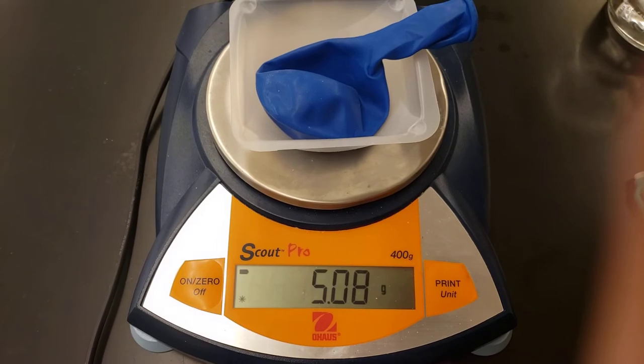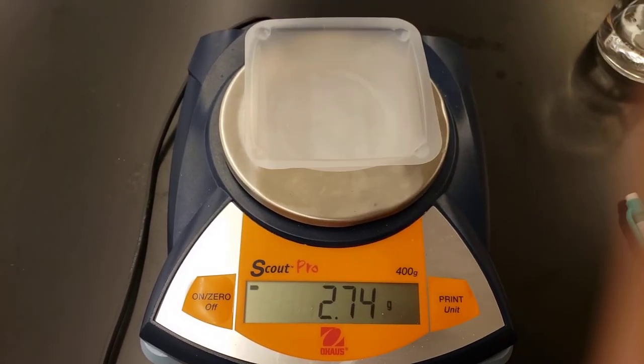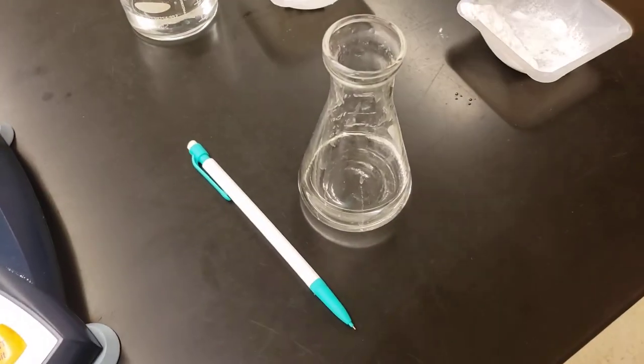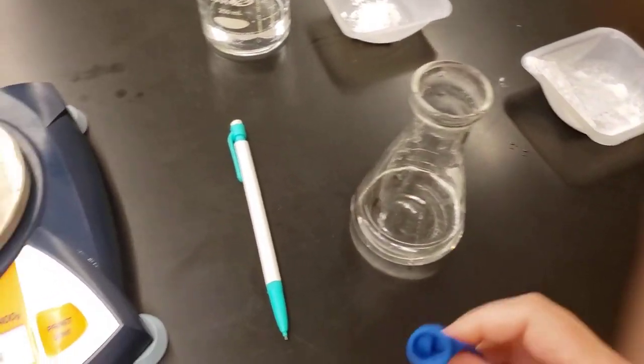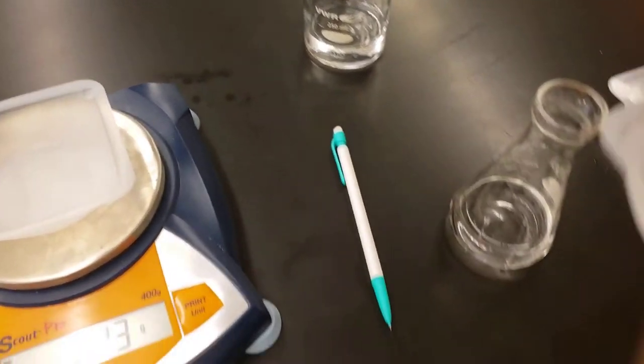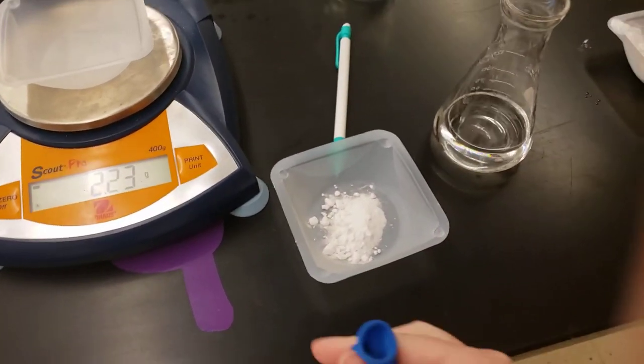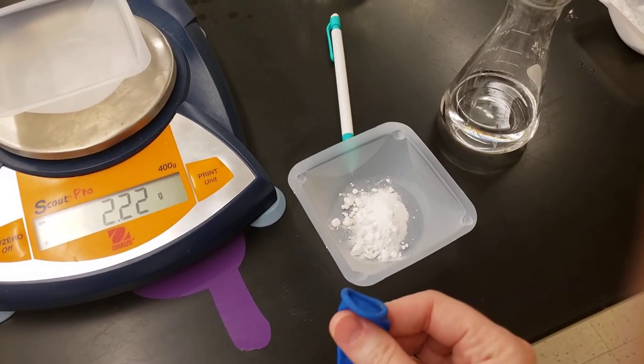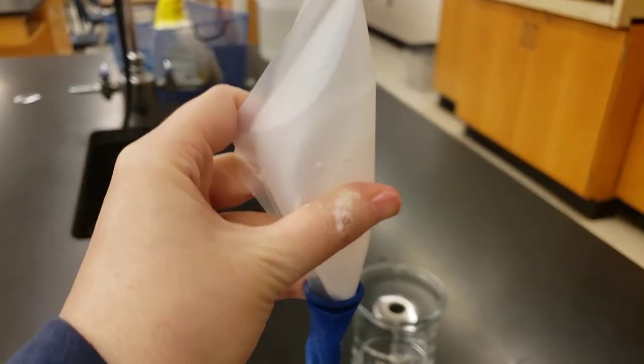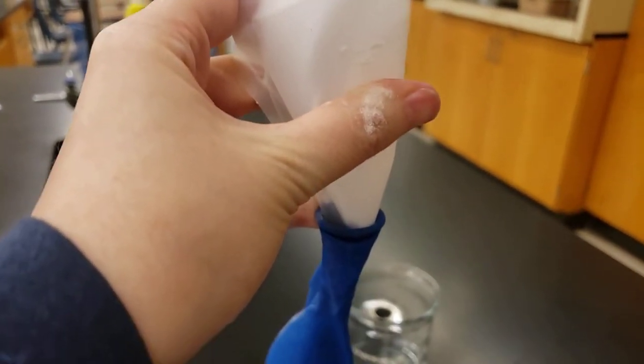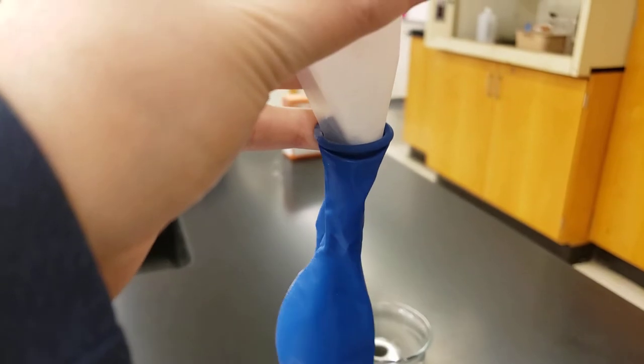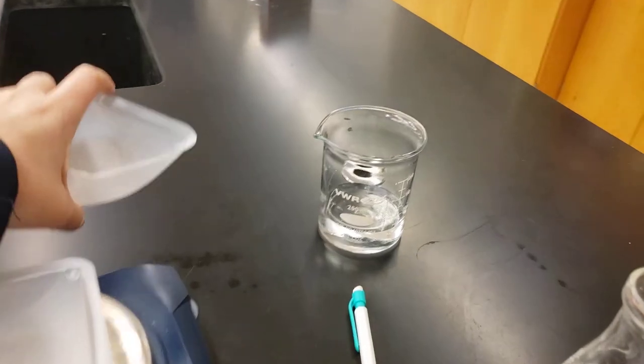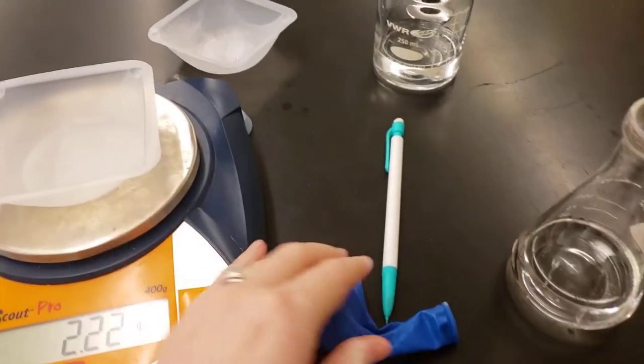So now we're ready to get started. We are going to take our balloon and we are going to take our Erlenmeyer flask and we are going to take our weigh boat full of baking soda and we are going to funnel the baking soda into the balloon. So I have funneled all of my baking soda into the mouth of the balloon and I can set my balloon and now my empty baking soda weigh boat aside.